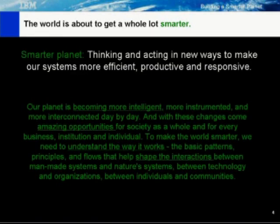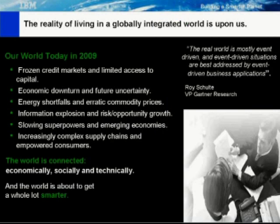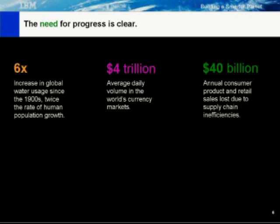IBM's Smart Planet concept is really about thinking and acting in new ways to optimize our systems to be more efficient, more productive, and more responsive. When we talk with customers today, most of them are talking about how to reduce costs. They're very focused on how to utilize their infrastructure more efficiently and help their people work smarter. So business event processing is really about helping customers take advantage of what they have and to help their employees and systems operate more effectively.